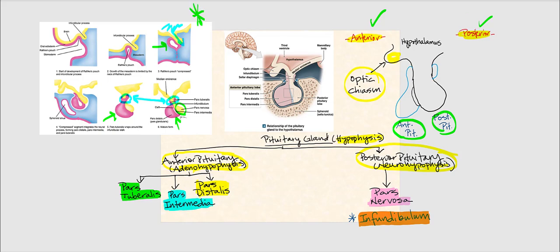The components of the anterior pituitary begin with the pars tuberalis — highlighted in green — which acts like the hand of the anterior pituitary as it grips the extension of the hypothalamus. That extension is called the infundibulum, sometimes referred to as the pituitary stalk, highlighted in orange. It is the part of the hypothalamus that extends downward leading into the posterior pituitary.